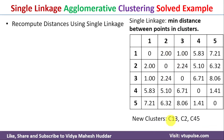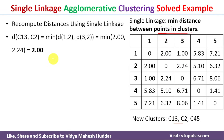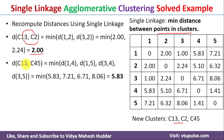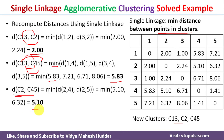We recompute distances using single linkage between clusters C13 to C2, C13 to C45, and C2 to C45. For C13 and C2: minimum of distance(1,2) and distance(3,2) = 2. For C13 to C45: minimum of distances(1,4), (1,5), (3,4), and (3,5) gives 5.83. The distance between C2 and C45 is 5.10. We update the table with these new distances.